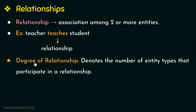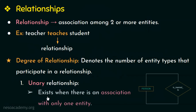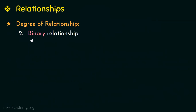Next let us see the degree of relationship. Degree of relationship denotes the number of entity types that participate in a relationship — it tells how many entities are associated or linked together. A relationship type of degree one is called a unary relationship. A unary relationship exists when there is an association with only one entity, where that entity is linked or related to itself.